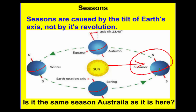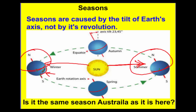Looking at the opposite — winter — the axis is pointed away from the Sun for the northern hemisphere, so we're not getting as much sunlight as we were in summer. The northern hemisphere is going to be in winter, and the southern hemisphere, since it's receiving all that sunlight, is going to be in summer. Coming from summer, next we have autumn, then winter, then spring, and back to summer.